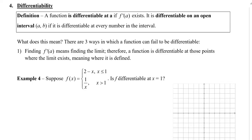In this video, I'm going to show you what it means for a function to be differentiable. A function is differentiable at a if f prime of a exists. It's differentiable on an open interval a to b if it is differentiable at every number in the interval. Finding f prime of a means finding the limit, so a function is differentiable at those points where the limit exists, meaning where it is defined.